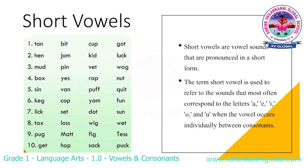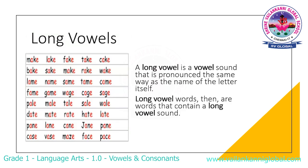Short vowels. Short vowels are vowel sounds that are pronounced in a short form. The term 'short vowels' is used to refer to the sounds that most often correspond to the letters A, E, I, O, and U when the vowel occurs individually between consonants.